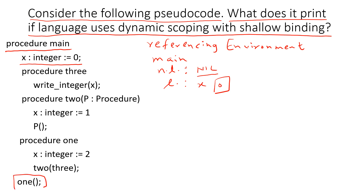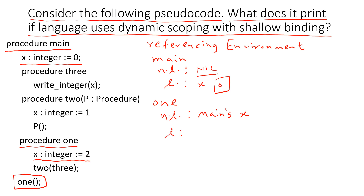This is the code for main — we call procedure 1 here. As soon as you call procedure 1, we create a referencing environment for it. Since procedure 1 is called from main, everything from main is copied into procedure 1's non-local compartment, which includes main's x. However, procedure 1 has its own copy of x with value 2, so it will not access main's x.